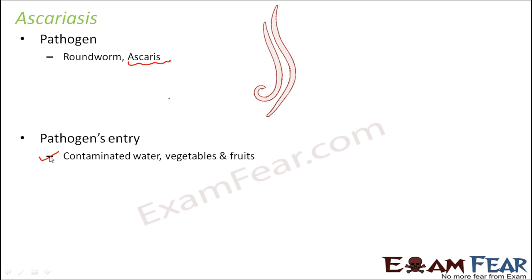Vegetables like cauliflower or cabbage often tend to have these kinds of worms, which are clearly visible to the naked eye. You need to wash the vegetables really well before cooking. Even if you cook them, the worm may die but eggs inside it can survive. Even if those eggs enter your body they can cause big problems later.